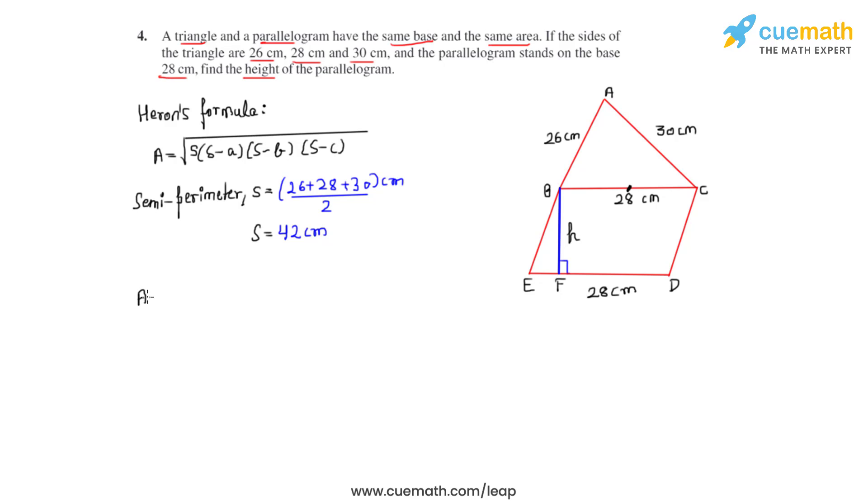Now we can find the area of triangle ABC by substituting these values back into Heron's formula. So we write under root 42 times 42 minus 26 times 42 minus 28 times 42 minus 30 centimeter square.